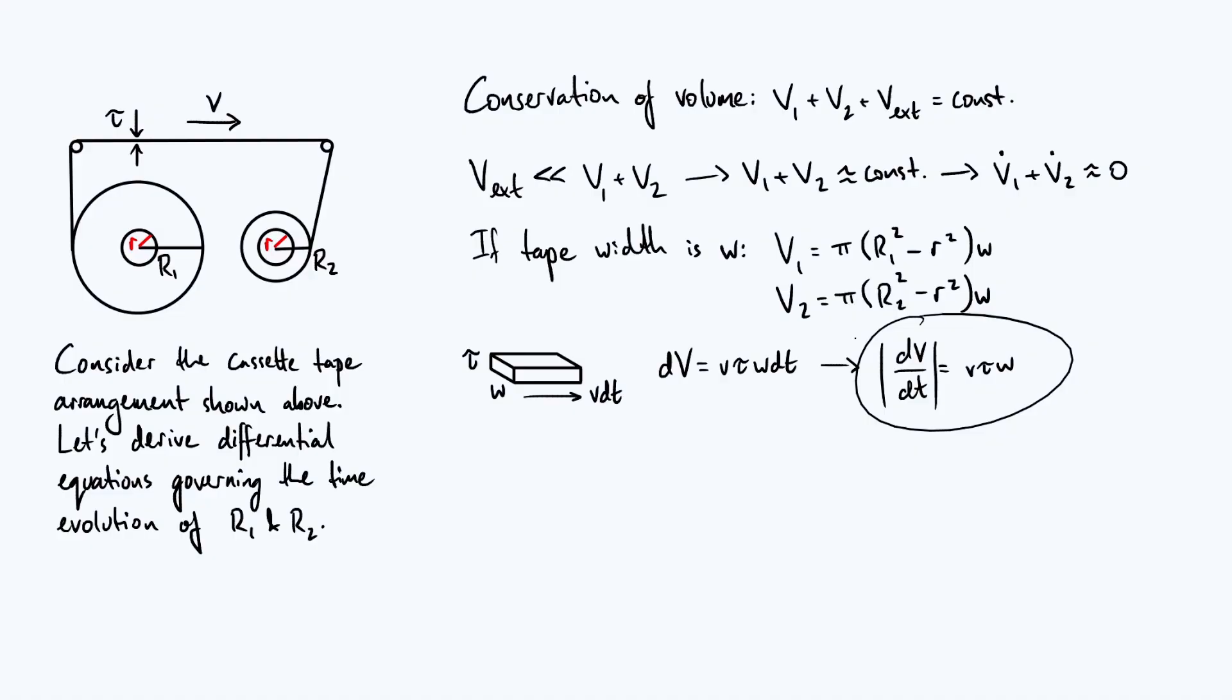Now, this expression here gives us the local volume flow rate at any particular point on the tape where the speed is v. We talked earlier about how we're assuming that any tape that leaves the left spool essentially immediately ends up on the right spool,